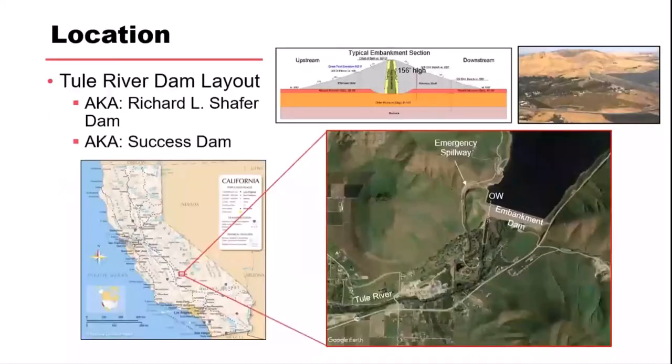Background: Thule River is a challenging one because it was originally called Richard L. Schaffer Dam when it was first built. It got changed to Success Dam, which ended up being an irony because it had a huge liquefaction conflict and issues. Because of that, they changed the name to Thule River.